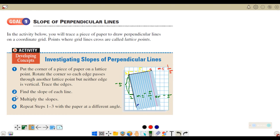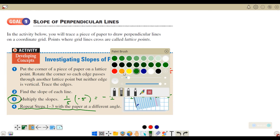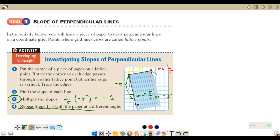Now, in step 3, we multiply the two slopes. We have 1 over 5 times negative 5. You will end up with negative 1. Even if you repeat steps 1 to 3 with the paper at different angles, you can rotate it however you want—as long as it fits on lattice points—you will still end up with negative 1. I'm telling you in advance that the answer will always be negative 1.